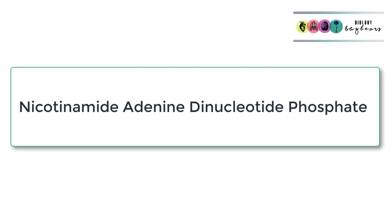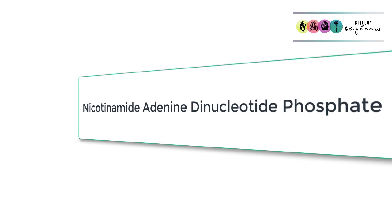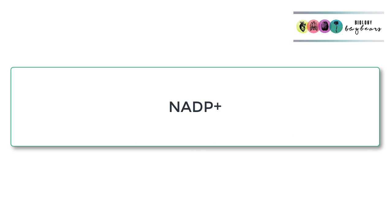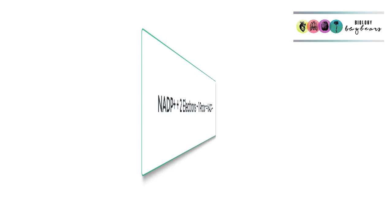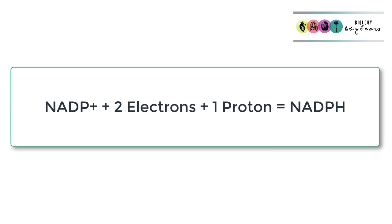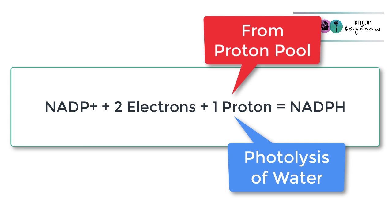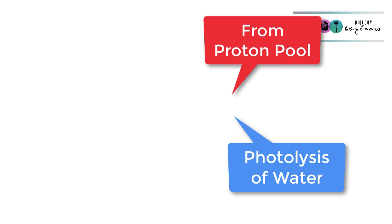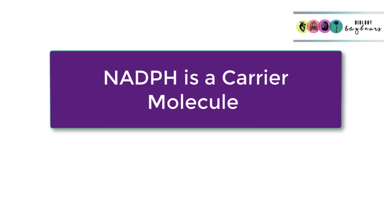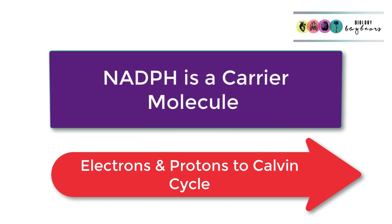Basically then, you have this molecule called nicotinamide adenine dinucleotide phosphate, and you have to know its full name. It's otherwise referred to as NADP+. It's going to combine or trap two electrons and a proton, those protons from that proton pool, and it's going to form NADPH. NADPH is a carrier molecule. It's going to carry those electrons and that proton to the dark stage of photosynthesis, or the Calvin cycle.